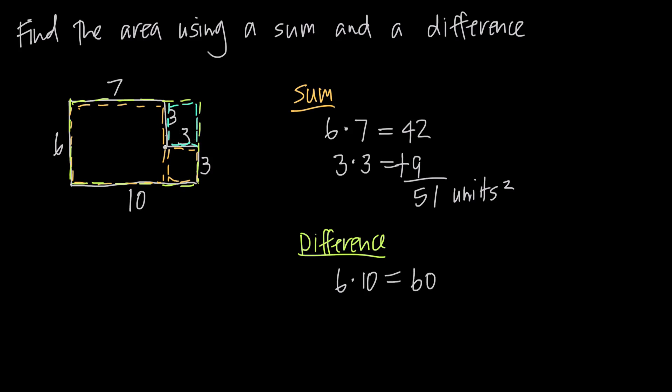And then we'd say the area of this small part length and width is 3. They're both 3. It's a square. So we'd have to remove 3 times 3. So we say 3 times 3 is equal to 9. And then we would say 60 minus 9 gives us 51 square units, 51 units squared. And in this case, we used a difference because we did subtraction.